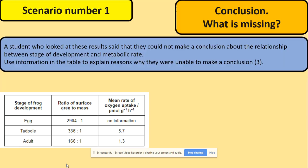Let's have a look at a few examples here. We've got the first scenario, which is the conclusion. A student who looked at those results said that they could not make a conclusion about the relationship between stage of development and metabolic rate. So use the information in the table to explain the reasons why they were unable to make conclusions.